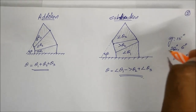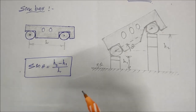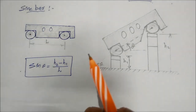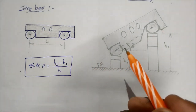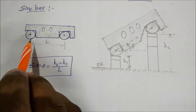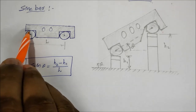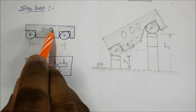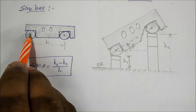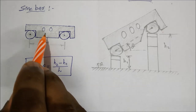Next, discussing the sign bar. The sign bar is also used for angular measurements. It is a rectangular board with two rollers — a fixed wheel and a rotating wheel — and different holes provided. The roller center-to-center distance between the holes is important.